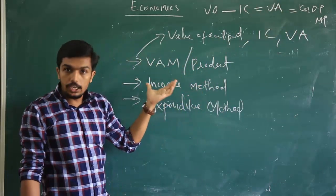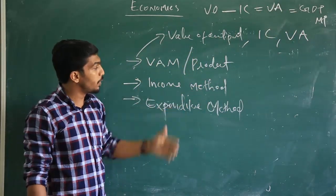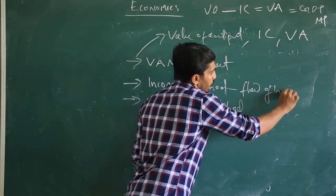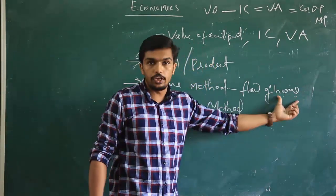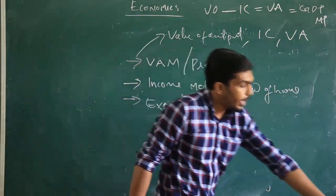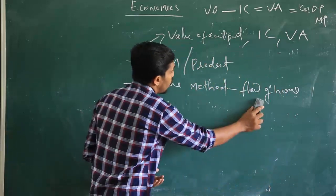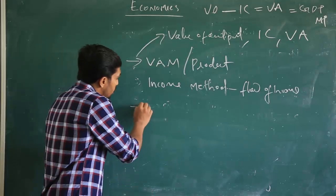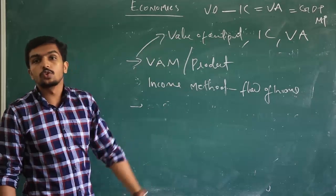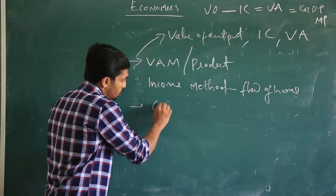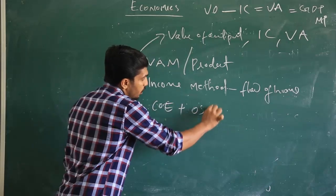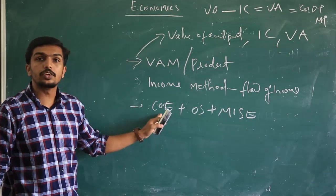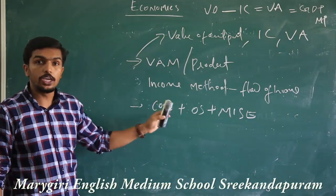The second method is the Income Method. This method mainly considers the flow of income. We analyze national income on the basis of flow of income — specifically, what are the main income-generating sources in an economic system. We classify the entire source of income into three categories: compensation of employees, operating surplus, and mixed income from self-employed activities.